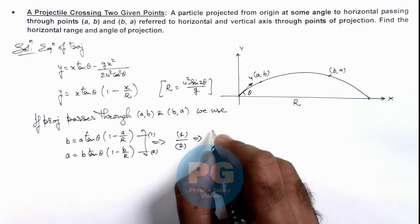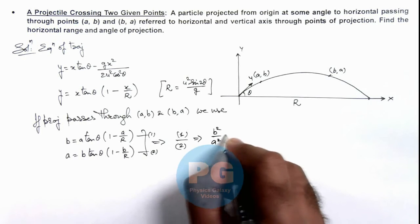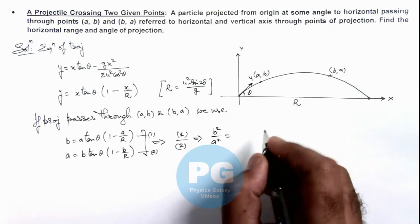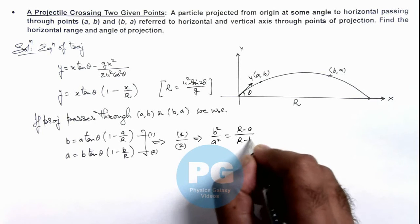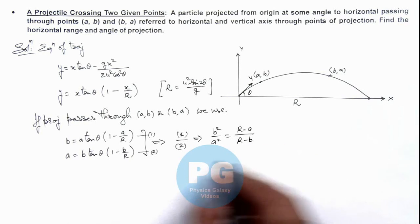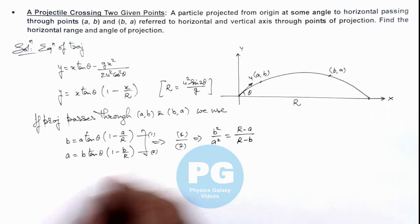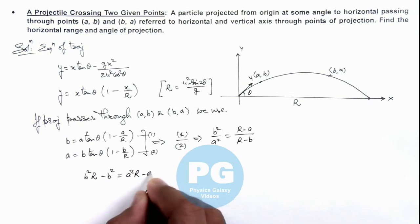See what we are getting. This will give us b squared by a squared equals - here tan theta gets cancelled out - this is R minus a upon R minus b. If we further simplify this, it will give us b squared (R minus b) equals a squared (R minus a).